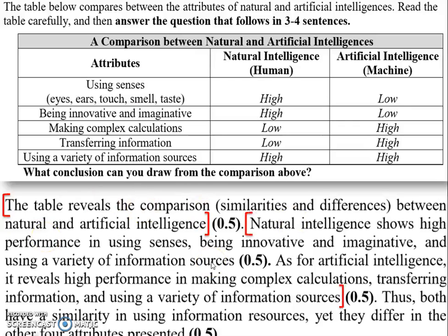For step two, since we don't have numbers, we make a comparison. We notice that for natural intelligence, there is more use of senses and being innovative, while for artificial intelligence, the machine is able to make complex calculations and transfer information. For using a variety of information sources, they are the same. The conclusion: 'Thus, they both share a similarity in using information resources, yet they differ in the other four attributes presented.' One paragraph divided into three parts: introduction, analysis, and conclusion.